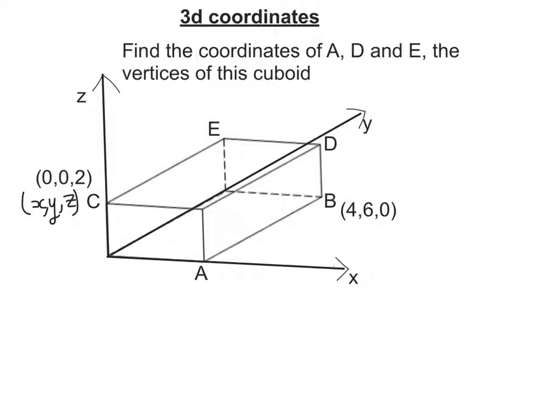We also know that B is 4 along the X, 6 along the Y, and none along the Z. So if it's 4 along the X, I think we can be pretty safe to say this distance here is 4, and if it's 6 along the Y, this is 6.